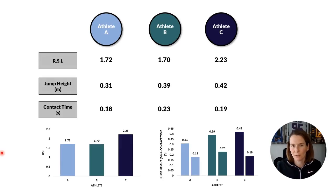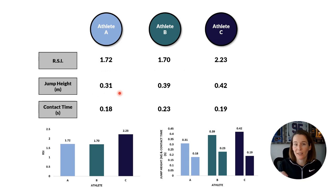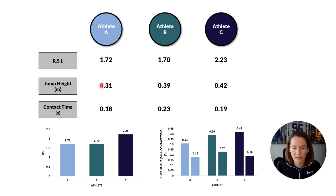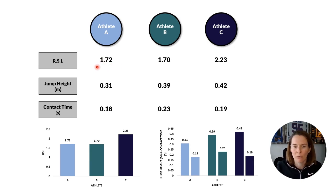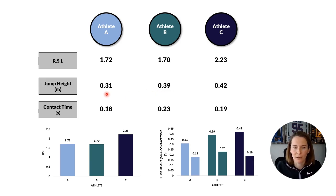Let's take a look at some example data. I have three athletes, and we can see their RSIs and their jump height — the calculation uses jump height in meters and then the contact time, so it's this ratio that determines your RSI. Comparing athlete A and B, on the face of it they have two very similar RSIs, around 1.7. But when we look at the underlying components, we see quite a different profile: athlete B can jump a much greater height — 39 centimeters as opposed to 31 for athlete A — but they are using a longer contact time, 230 milliseconds as opposed to 180, to achieve that height.